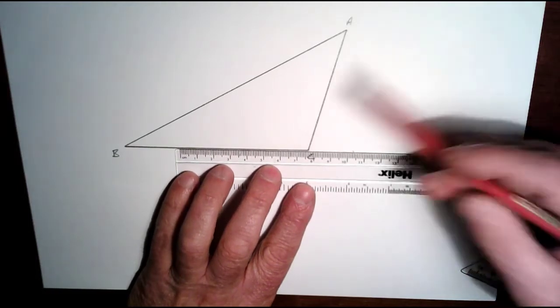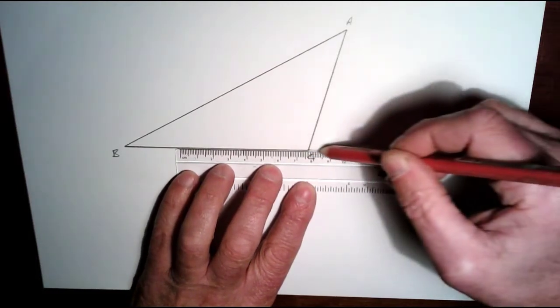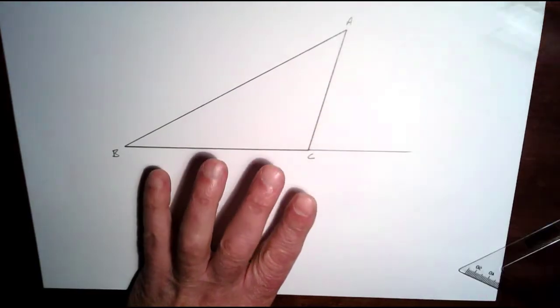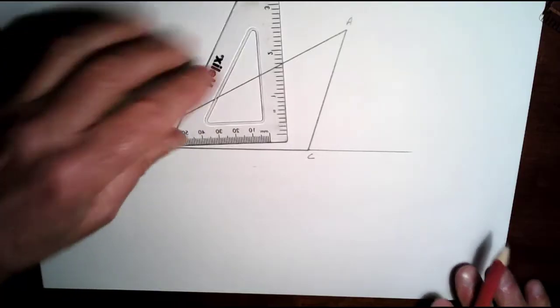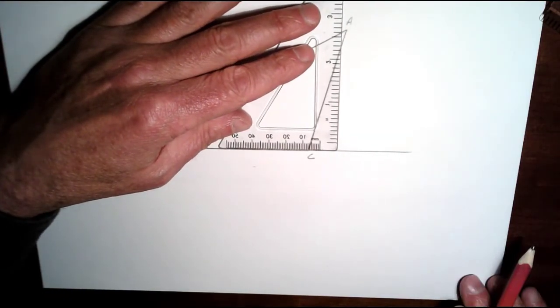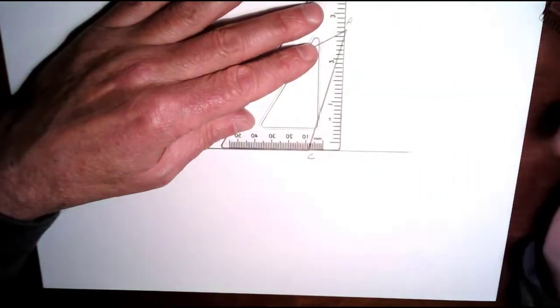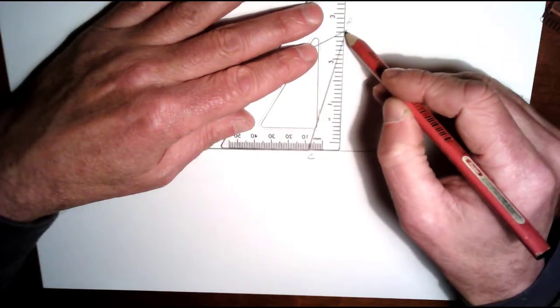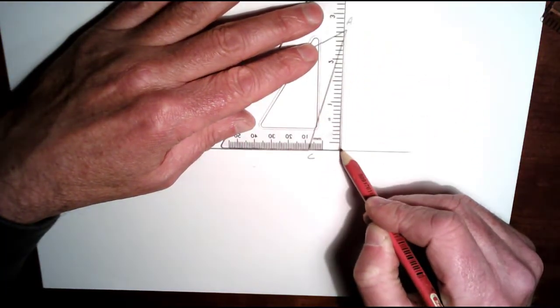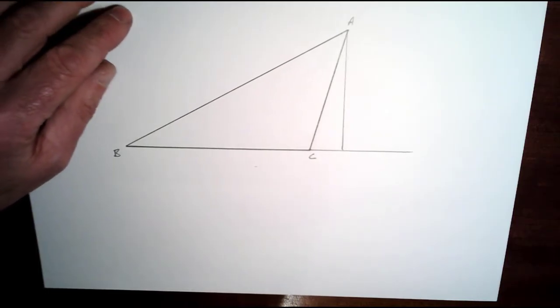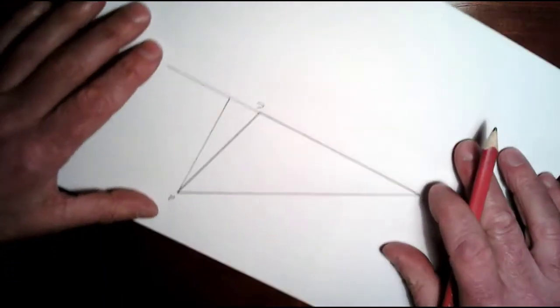I'm just going to bring BC out along here, and then drop a perpendicular down from A to B. So that's my altitude there—it's my first altitude.